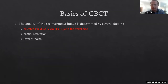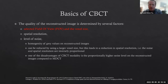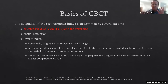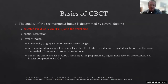Regarding noise level: when we talk about the level of noise, we estimate the homogeneity of gray values on reconstructed images. It can be reduced by using a larger voxel size, but this leads to a reduction in spatial resolution. Namely, noise and spatial resolution are inversely proportional. One of the disadvantages of CBCT modality is the proportionally higher noise level on reconstructed images compared to an MDCT.